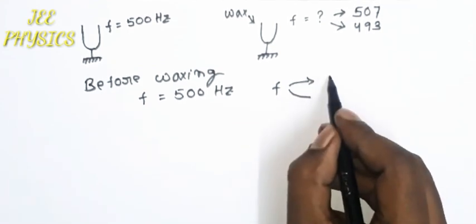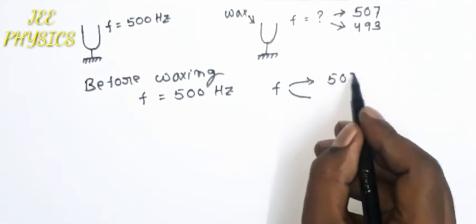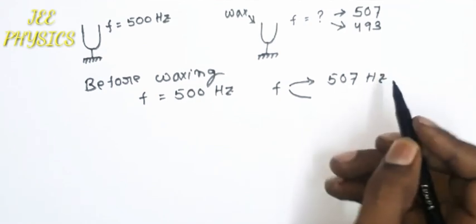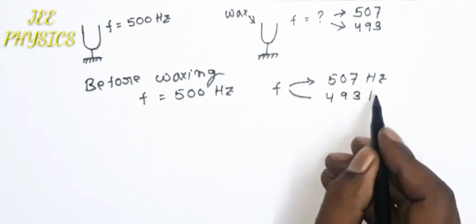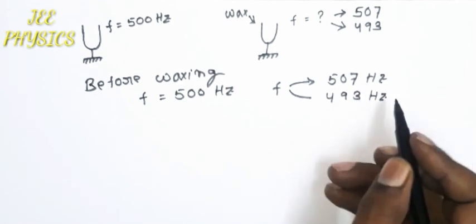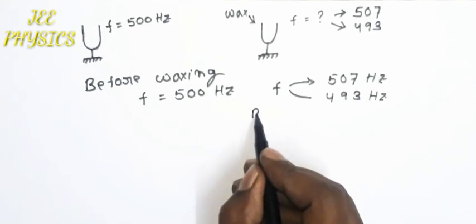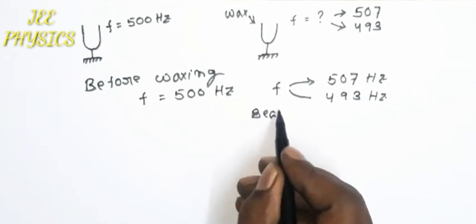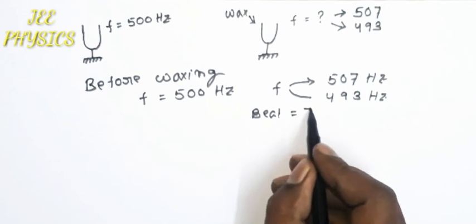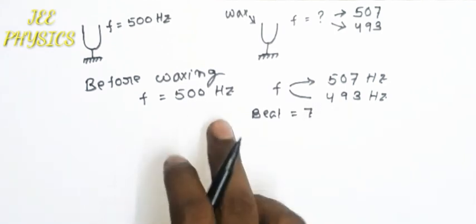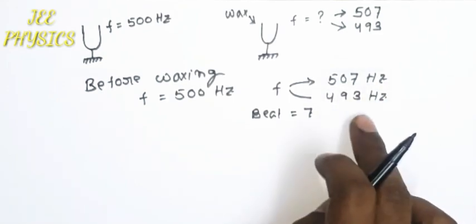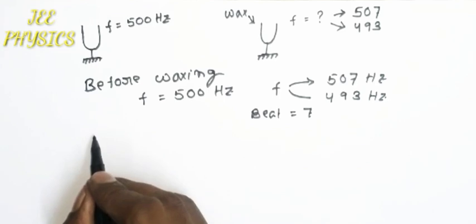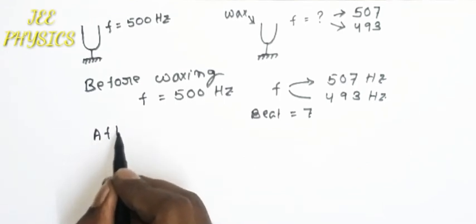Before waxing, the frequency of the known tuning fork is 500 Hz, and the frequency of the unknown tuning fork is either 507 Hz or 493 Hz, since the number of beats is 7. So the unknown frequency may be 507 or 493. Now we apply waxing — so after waxing, what happens?